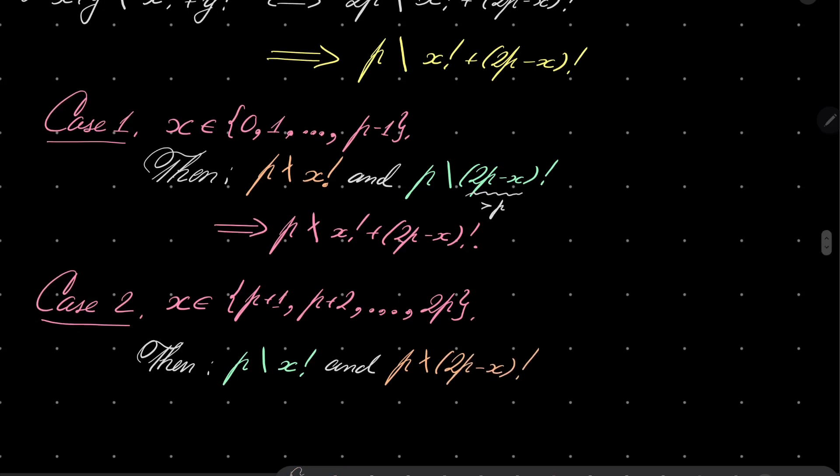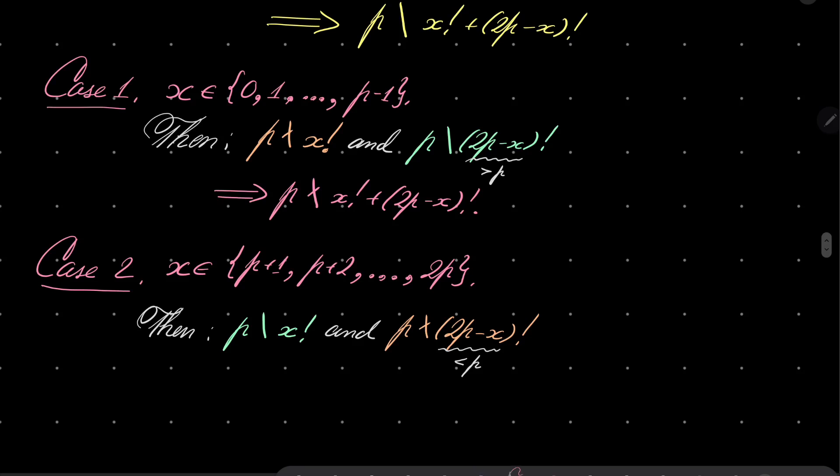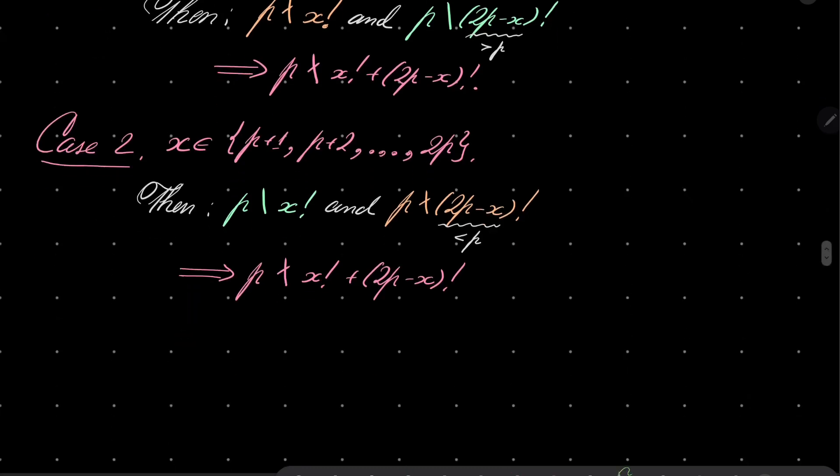Why is that? Because this time, this number right here is less than p. So again, p does not divide x factorial plus 2p minus x factorial. And last case,